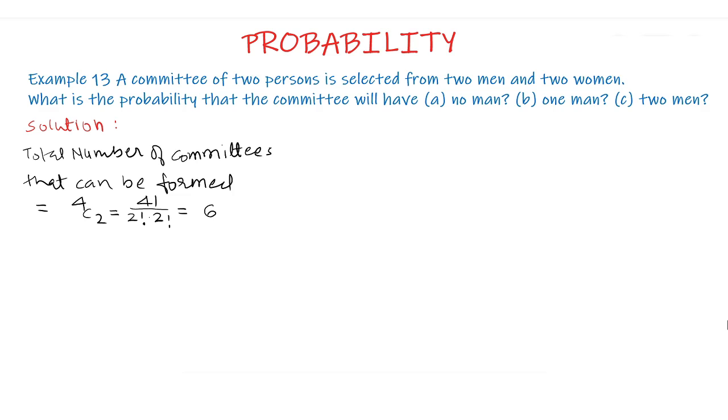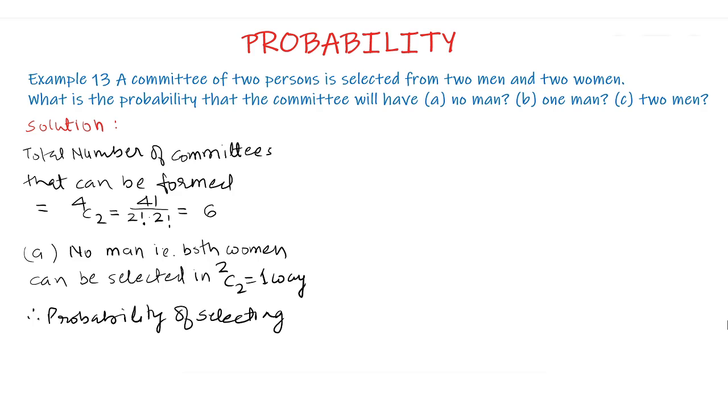Now we have to solve part A. Part A is we have to select no men. It means that we have to select both women can be selected in 2C2 ways which is equal to one way. Therefore, probability of selecting no men equal to 1 upon 6.